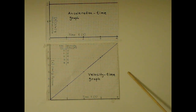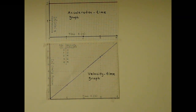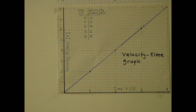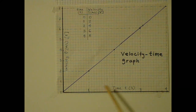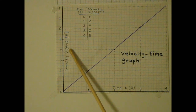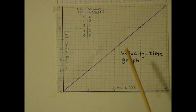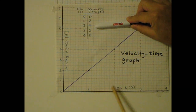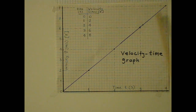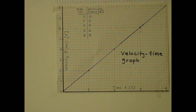It is better to put the velocity-time graph underneath the acceleration-time graph. The horizontal axis is time in seconds — one, two, three, four — and the vertical axis is velocity in meters per second east. We plot the points: (0,0), (1,2), (2,4), (3,6), and (4,8). The velocity-time graph is a straight line because the acceleration is constant — in other words, the change of velocity is constant.